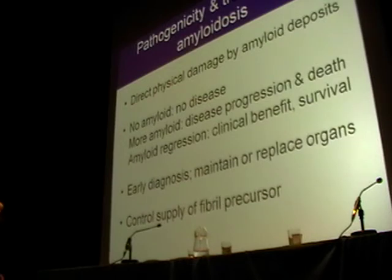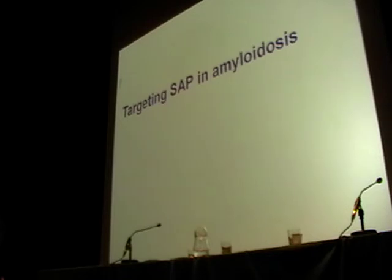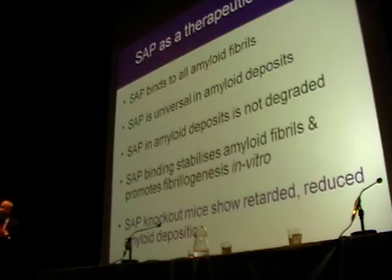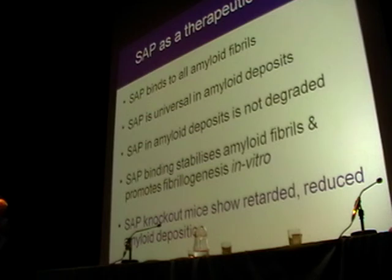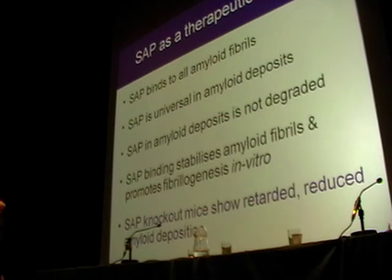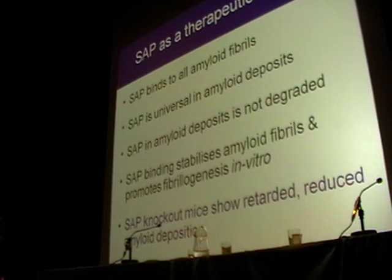We urgently need treatments that target amyloid deposits themselves and make them go away. My idea for many years has been to target SAP, because it is universally present in all amyloid deposits of all types. SAP has a calcium-dependent ligand binding property that enables it to bind to amyloid fibres, so wherever amyloid fibres form in the body, SAP binds and accumulates there. Evidence suggests that this binding is part of the pathogenesis: SAP is not degraded in deposits, it stabilizes amyloid fibres, and protects them from proteolysis and phagocytic digestion. Furthermore, when we make SAP knockout mice and try to induce amyloid, they develop it more slowly and in reduced amounts compared to wild-type mice — confirming this protein is definitively involved in pathogenesis.